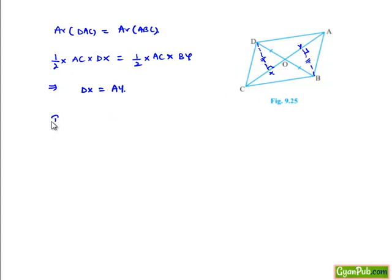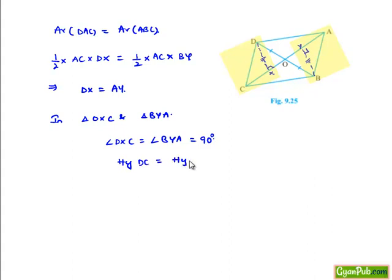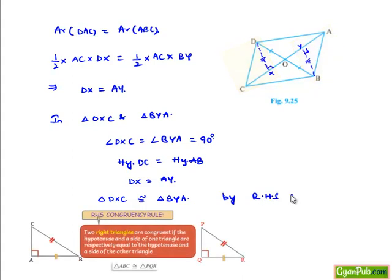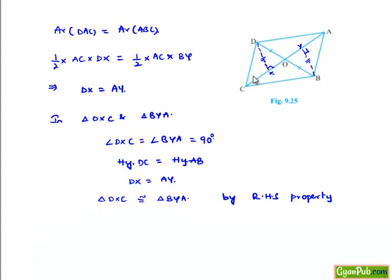Now let us consider both triangles: triangle DXC and triangle BYA. In these triangles, angle DXC equals angle BYA equals 90 degrees, and hypotenuse DC equals hypotenuse AB, and DX equals BY. By the Right Angle-Hypotenuse-Side (RHS) property of congruency, triangle DXC is congruent to triangle BYA. Therefore, their corresponding angles are equal, so angle DCX equals angle YAB.